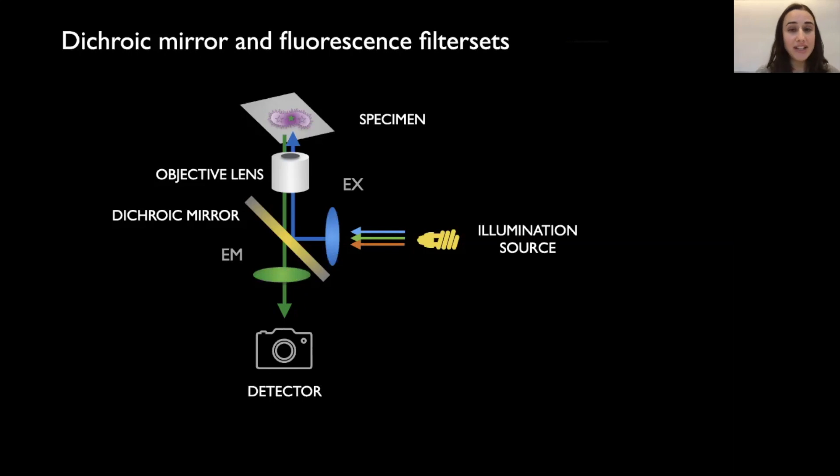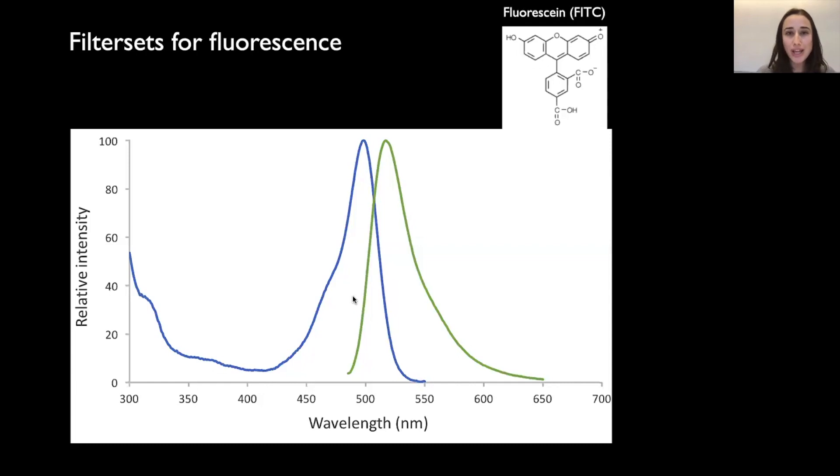But also in combination, the dichroic mirror is used in combination with the filter sets. So with the excitation filter and the emission filter, which will sit in the two optical paths. And the excitation filter will select just the wavelengths of the light used to excite our probe and the emission filter the same to select just the fluorescence. So how does this look like if we combine all together our fluorescence spectra from the dye? For example, here is still the FITC with filter sets and dichroic.